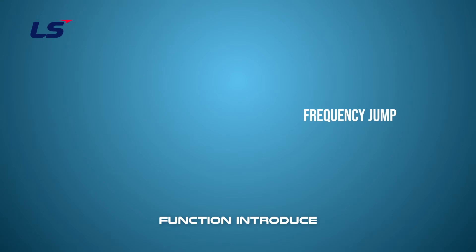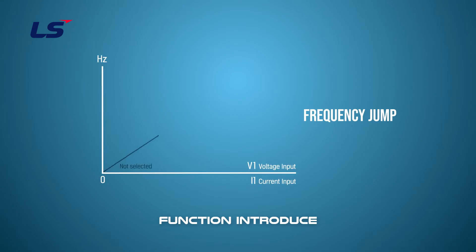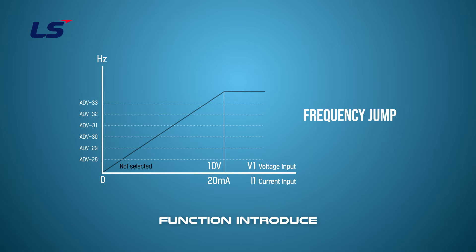Third, the frequency jump setting. This feature prevents you from operating in the resonant frequency band that may appear in your machine system. When the motor accelerates or decelerates, it passes through the frequency jump band, and frequency cannot be set within the set frequency jump band.